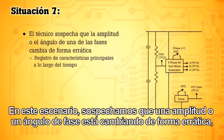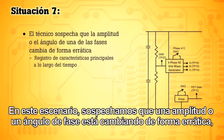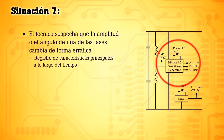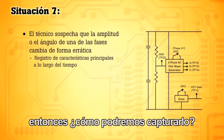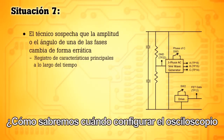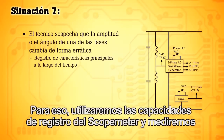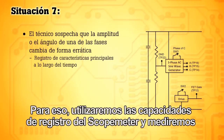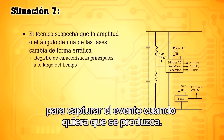In this scenario, we suspect a phase amplitude or phase angle is randomly changing, so we're going to measure the output of the three phases. The problem we'll be trying to solve happens randomly. So how do we capture that event? How will we know when to set up the oscilloscope and be sure we're watching when the event occurs? For that, we'll use the scope meter's recording capabilities to measure our key parameters over a long period of time and capture the event whenever it happens.